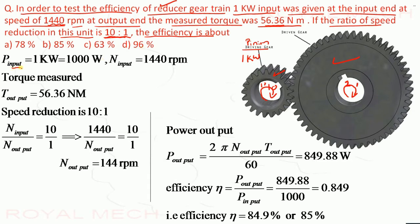Given in this question, power input 1 kW that is 1000 Watt and speed at the small gear is 1440 rpm. And the torque measured at output, see here, torque output and measured torque was, so torque output is 56.36 Nm.